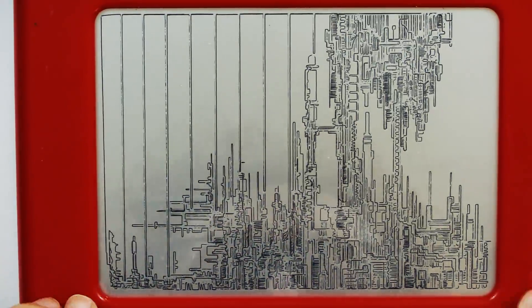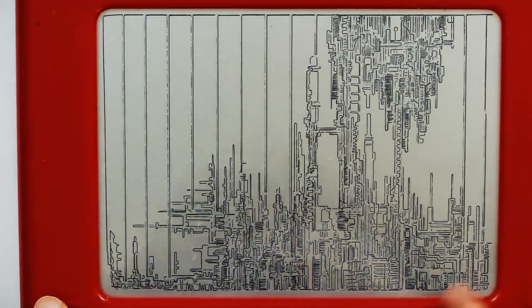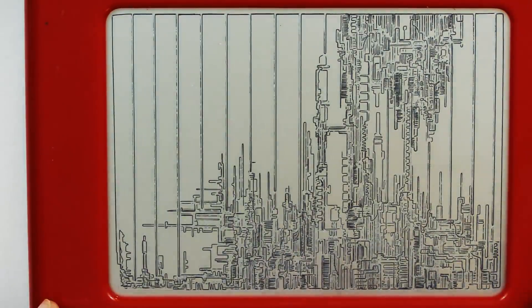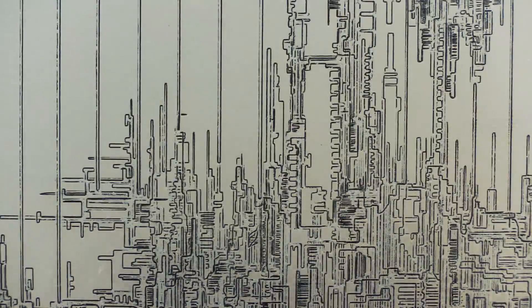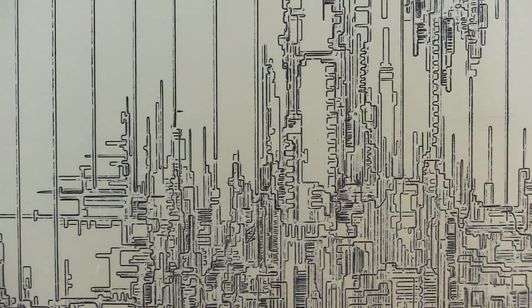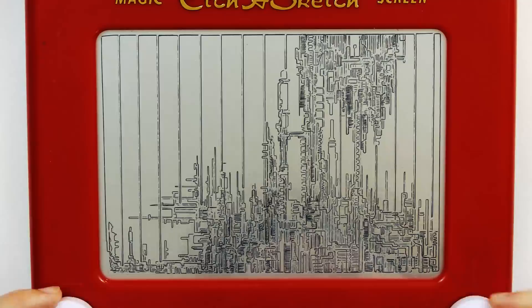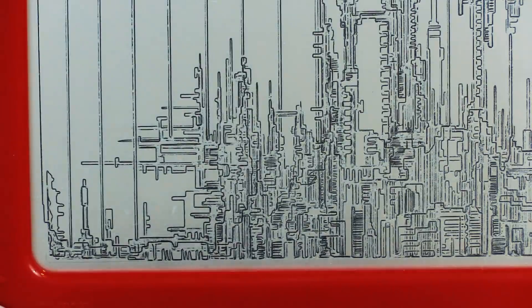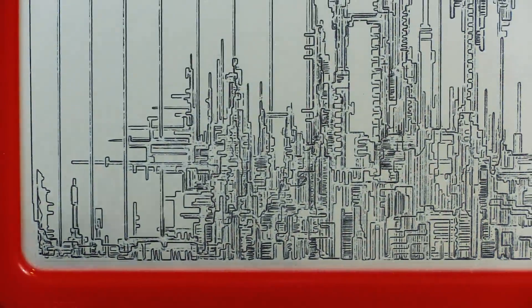And then when you shake it up, when you turn it over and shake it up, that's just—what is that? Aluminum shavings getting stuck back up to the glass with like static electricity or something? How do the metal shavings get stuck back up to the screen? Just sheer willpower? I don't know. It's pretty cool.